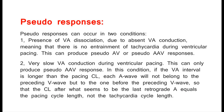Pseudo-responses can occur in two conditions: 1. Presence of VA dissociation due to absent VA conduction, meaning there is no entrainment of tachycardia during ventricular pacing — this can produce pseudo-AV or pseudo-AAV responses. 2. Very slow VA conduction during ventricular pacing, which can only produce a pseudo-AAV response. In this condition, if the VA interval is longer than the pacing CL, each A-wave will not belong to the preceding V-wave but to the one before it, so the CL after what seems to be the last retrograde A equals the pacing cycle length, not the tachycardia cycle length.